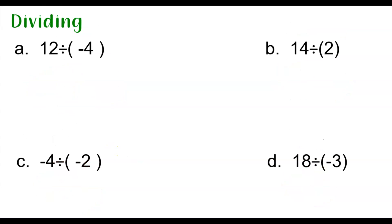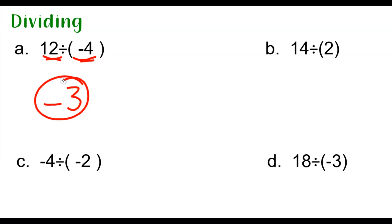Division works the same way, so let's take a look at a couple of division problems. In example A, one number is positive and one is negative, so the answer is going to be negative. 12 divided by 4 is 3, so the answer is negative 3. In part B, both numbers are positive, so the answer will be positive. 14 divided by 2 is 7, positive 7.